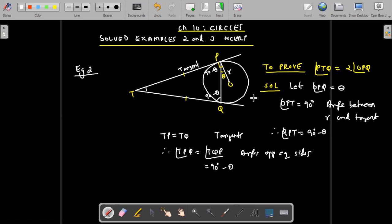Now in a triangle you know that sum of angles of a triangle is 180. So if I add this I am going to get 180. So in triangle TPQ I have already found out two angles. So one angle is 90 minus theta, the second angle is also 90 minus theta. So what will be angle T? That can be determined.